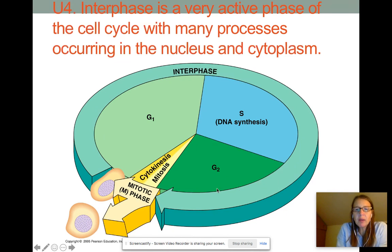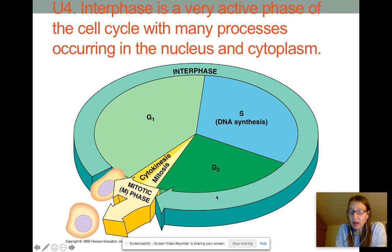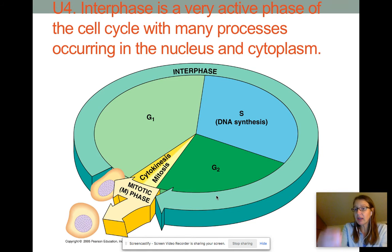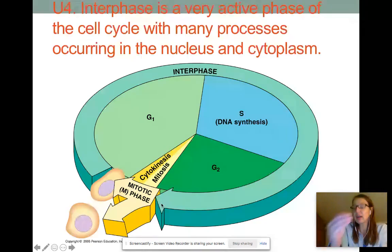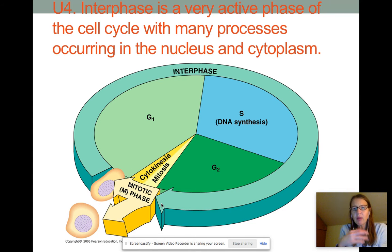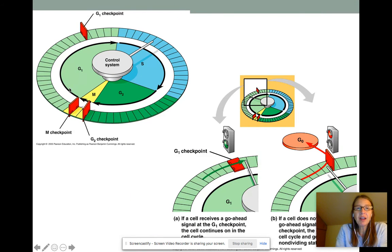There's going to be a number of checkpoints along the way in interphase that will signal to the cell: go ahead, you can keep going, you can replicate the DNA, keep growing, go ahead and divide. There are all these little checkpoints along the way that will either tell the cell to go on or not. I like this diagram because it's showing you where some of these checkpoints are.